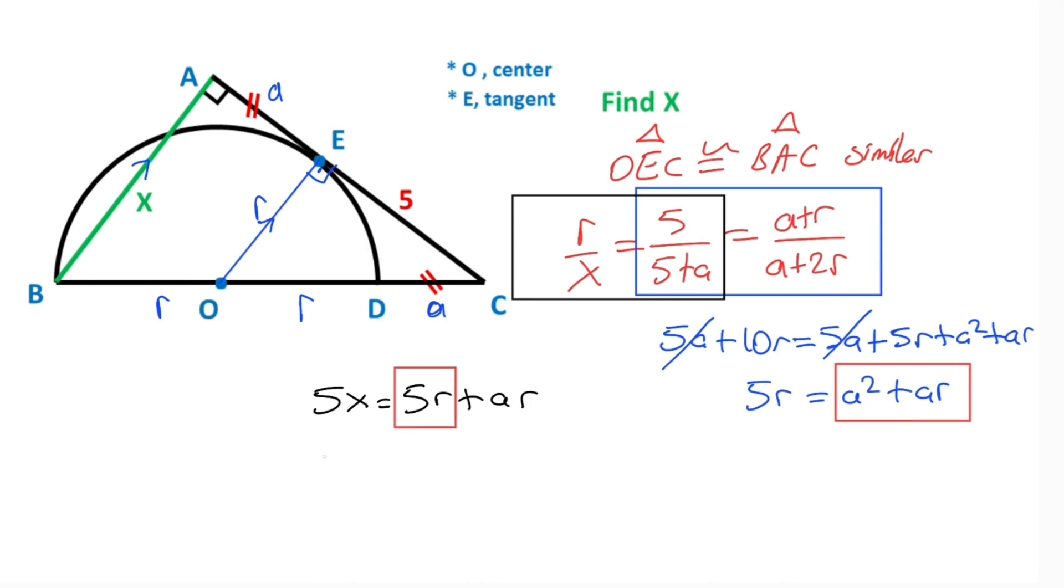Therefore, 5x must equal a squared plus ar plus ar, so 5x equals a squared plus 2ar.